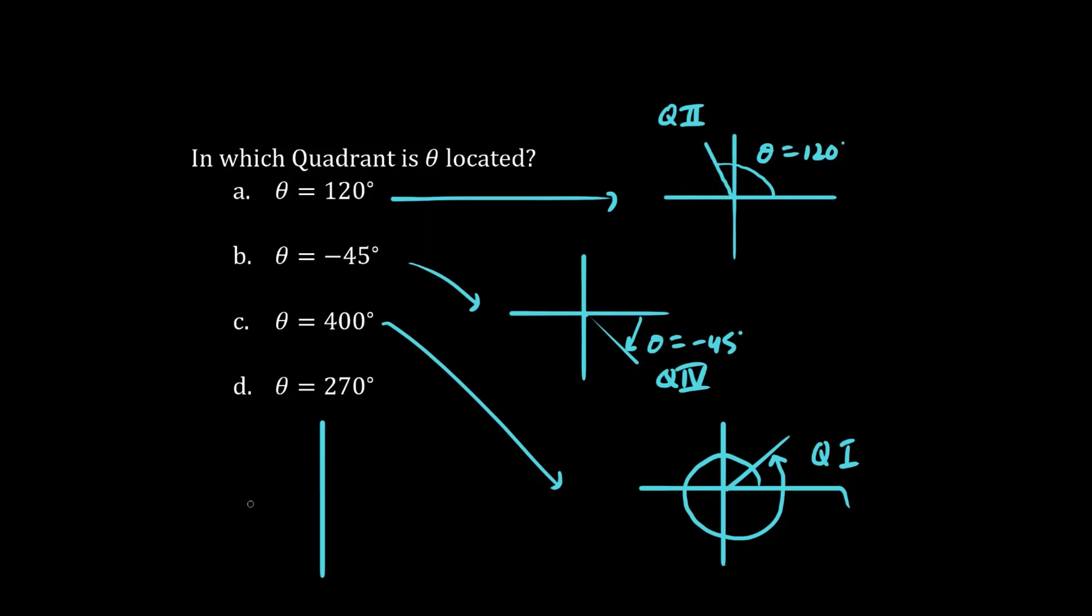Finally, we have theta equals 270. This is 90, 180, 270. We are between quadrants 3 and quadrants 4. So between these two quadrants.